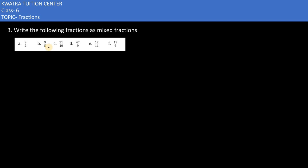Here in this case it says write the following fractions as mixed fractions. The first part is 9 by 2. You can divide 9 by 2, so you would get 4 here, 8 here, and 9 from 8, 1 will come.